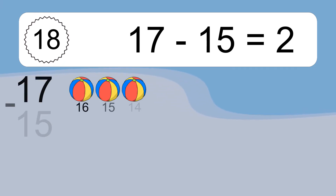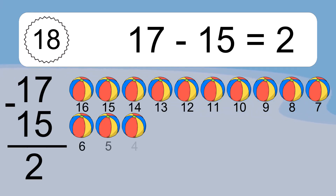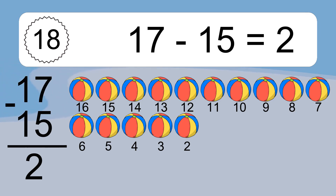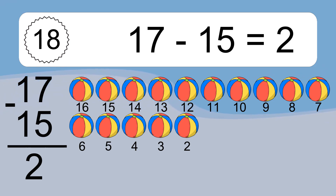17 minus 15 equals what? 17 minus 15 equals 2. Let's count it. 16, 15, 14, 13, 12, 11, 10, 9, 8, 7, 6, 5, 4, 3, 2.